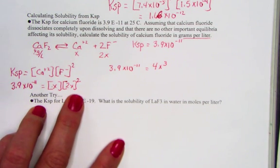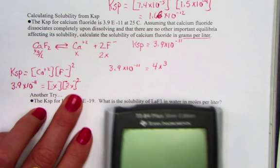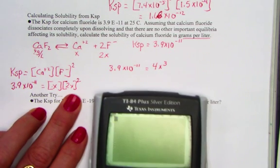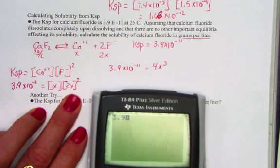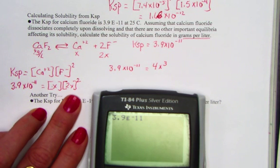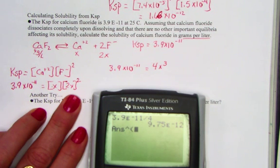So why don't we just pull out x with our calculator. 3.9 e negative 11th, that's 4. There's the 11th. 3.9 e negative 11 divided by 4, and that's equal now to x cubed. Raise that now to the value of cube root, and we get 2.13.